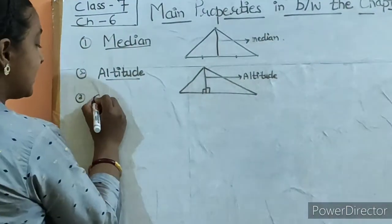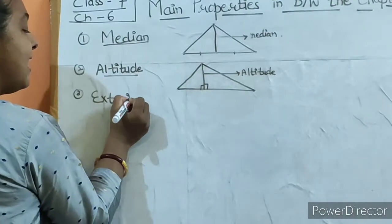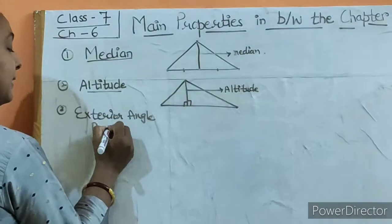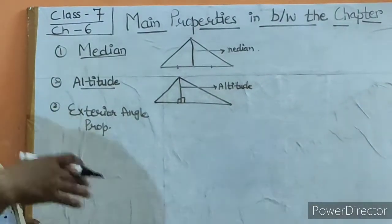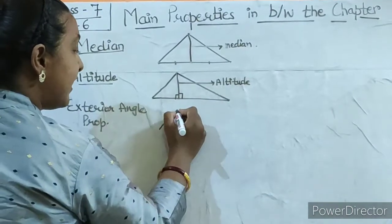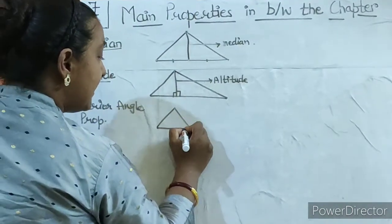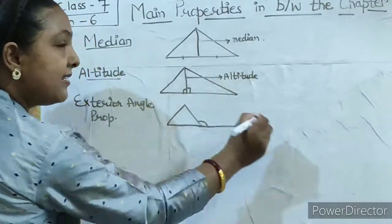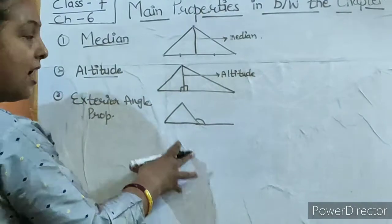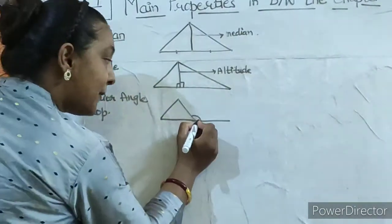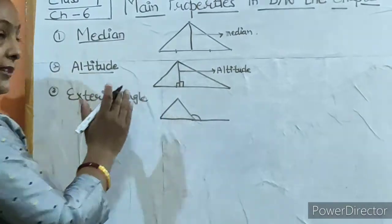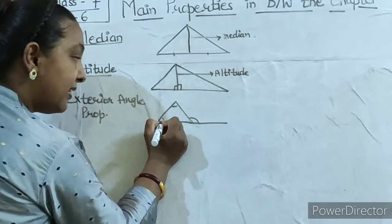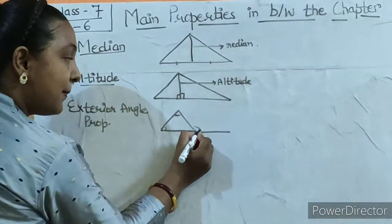The third property is exterior angle property. Exterior means outside. If I have a triangle and I extend one side, this angle formed outside is the exterior angle.